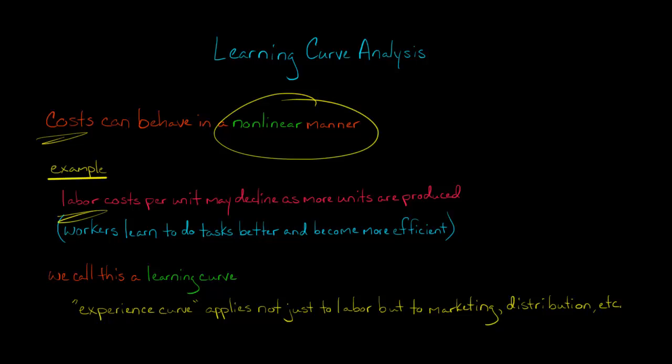One example is labor. The more units a company produces, the higher its total labor cost is going to be. But as a company produces more units, the labor costs on a per unit basis can actually decrease because the company's employees learn to do the tasks better and it takes them less time. The more you do something, the better at it you get, so you become more efficient and it takes less time.